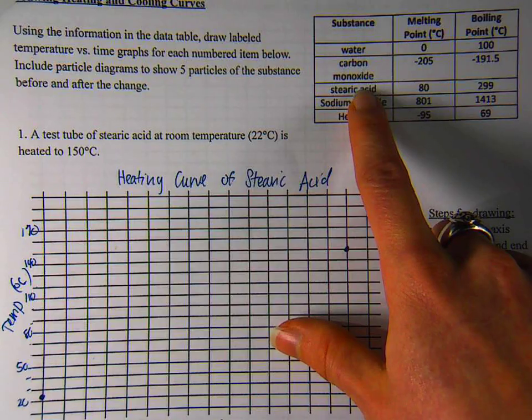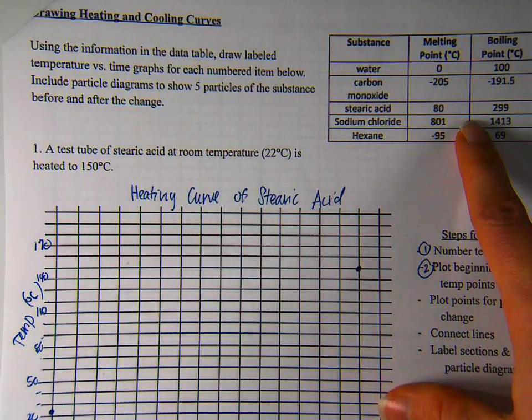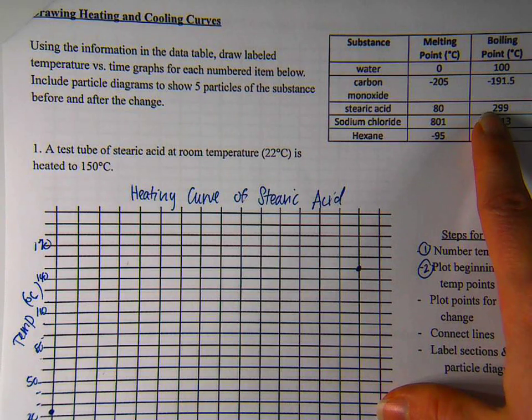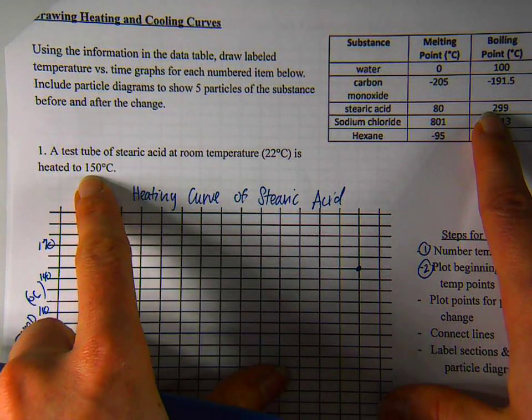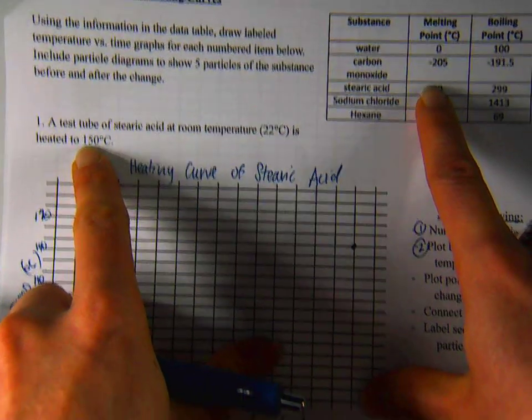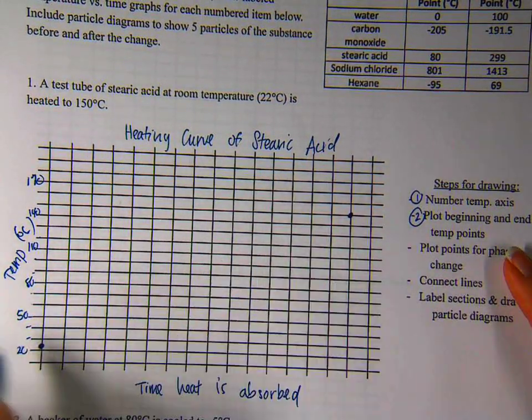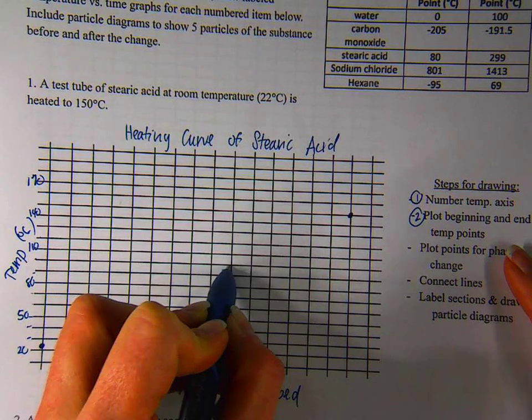If we go up to our data table, stearic acid says it melts at 80 degrees and boils at 299. I'm not heating it up to 299 degrees. So I'm not going to be worried about this point. But I am going to heat it past this 80 temperature mark. I know that at 80 degrees, as it melts, my temperature is going to flatten. So I'm just going to pick a spot somewhere in the middle. It doesn't really matter where.